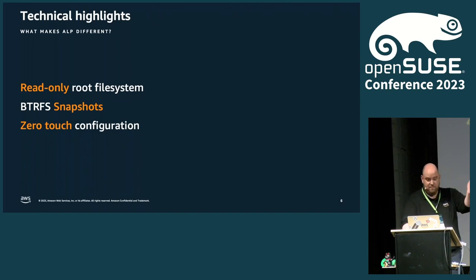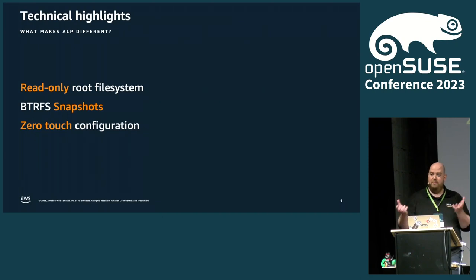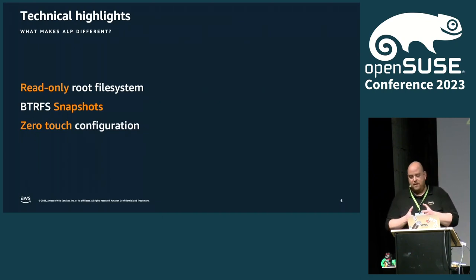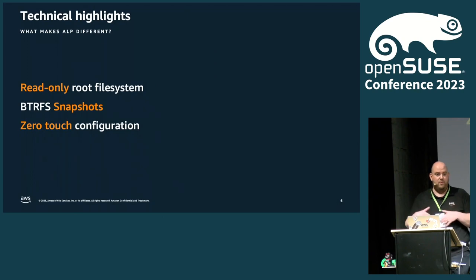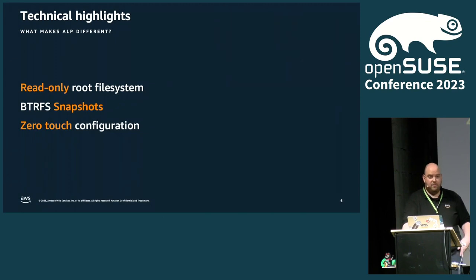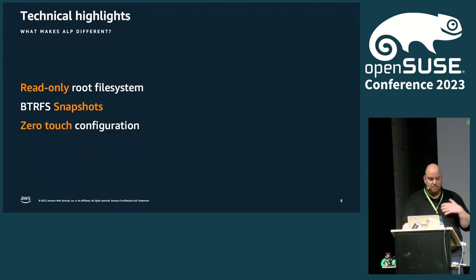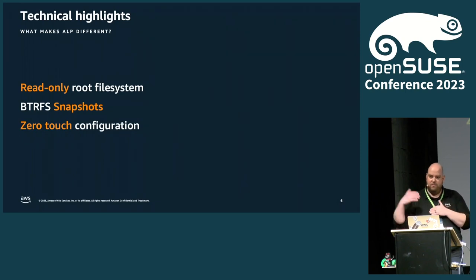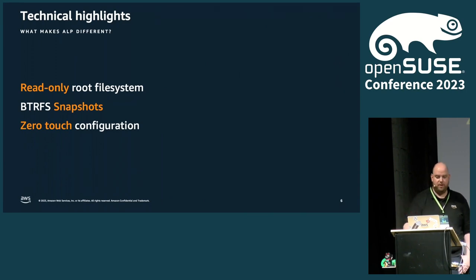How is that achieved? By BtrFS. You have snapshots, so ALP boots into a snapshot, and if you change something, you boot into a new snapshot — that's how these things work. And last but not least, if you don't want to touch your system manually, you don't have to. There are multiple ways like Ignition, Combustion, and Afterburn for first boot configuration, but also Ansible and Salt for ongoing operations — everything available out of the box.